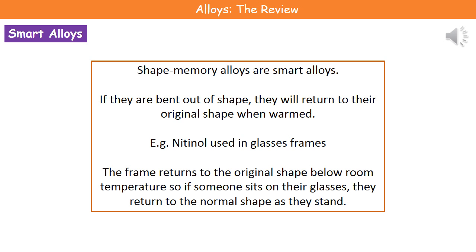We also have a newer type called smart alloys. The best example is a shape memory alloy, which is used in glasses frames that were advertised heavily a while back — where you can literally bend them into all different shapes and they return to normal.